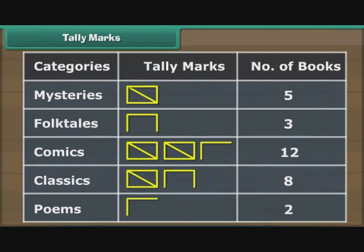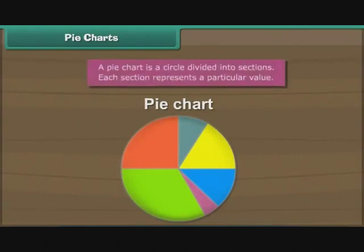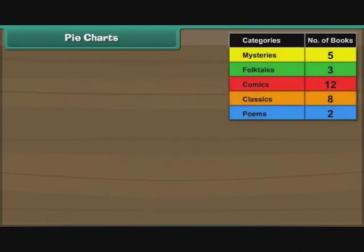We repeat the exercise for other categories of books. The end result is a tally marks table. A pie chart is a circle divided into sections. Each section represents a particular value. Let us now organize Ravi's data with the help of a pie chart.